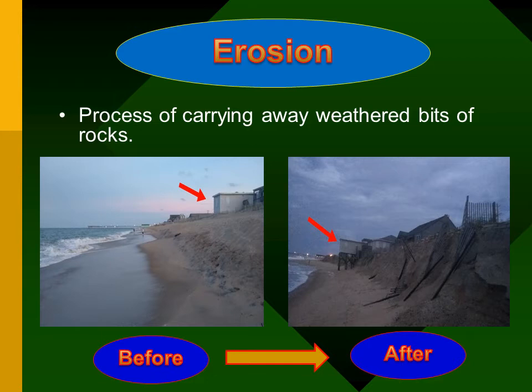The process of carrying away weathered bits of rock is called erosion. Erosion may take place by water, wind, or even glaciers. Glaciers are huge sheets of ice. Most glaciers move very slowly as gravity pulls them down, and as glaciers move they wear away bits of rock and soil.